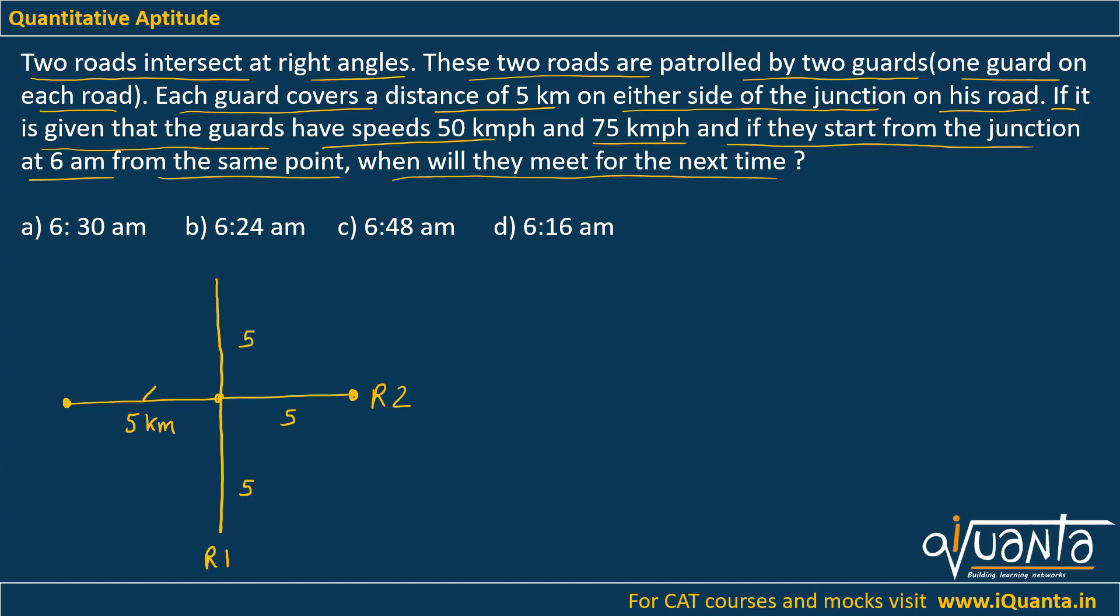So one guard will be moving on this particular road, one guard will be moving on this particular road. We have been given that they start from this junction at 6 a.m., and when will they meet for the next time if their speeds are 50 kmph and 75 kmph.